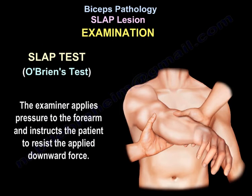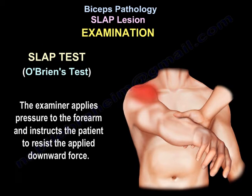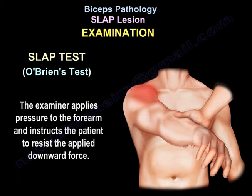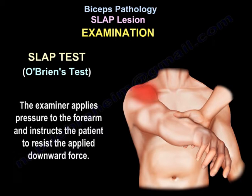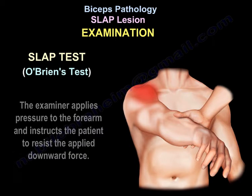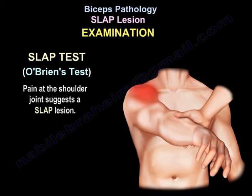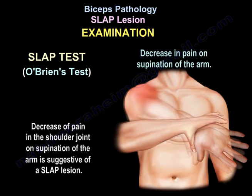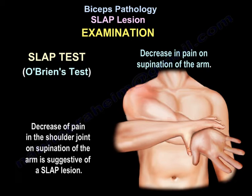The examiner applies pressure to the forearm and instructs the patient to resist the downward force being applied. You can see here the internal rotation of the arm with the pronated forearm. Pain at the shoulder joint suggests a SLAP lesion, and decrease of pain on supination of the arm is also suggestive of a SLAP lesion.